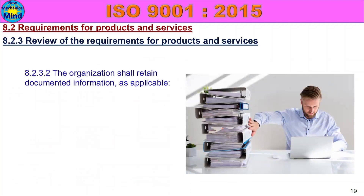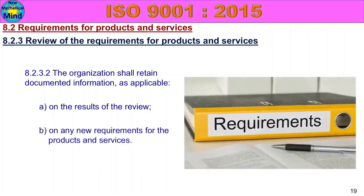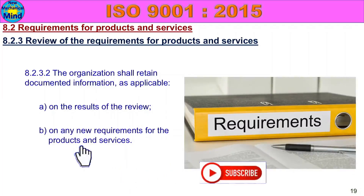The second additional subclass is 8.2.3.2. The organization shall retain documented information as applicable. All activities, processes, and operations can have documented information stored. In ISO 9001 standards, document retention is required. The results of the review — the process, operation, agreement, contract — the results are reviewed and retained. On any new requirements for the products and services, if we accept the customer requirements, we can confirm.